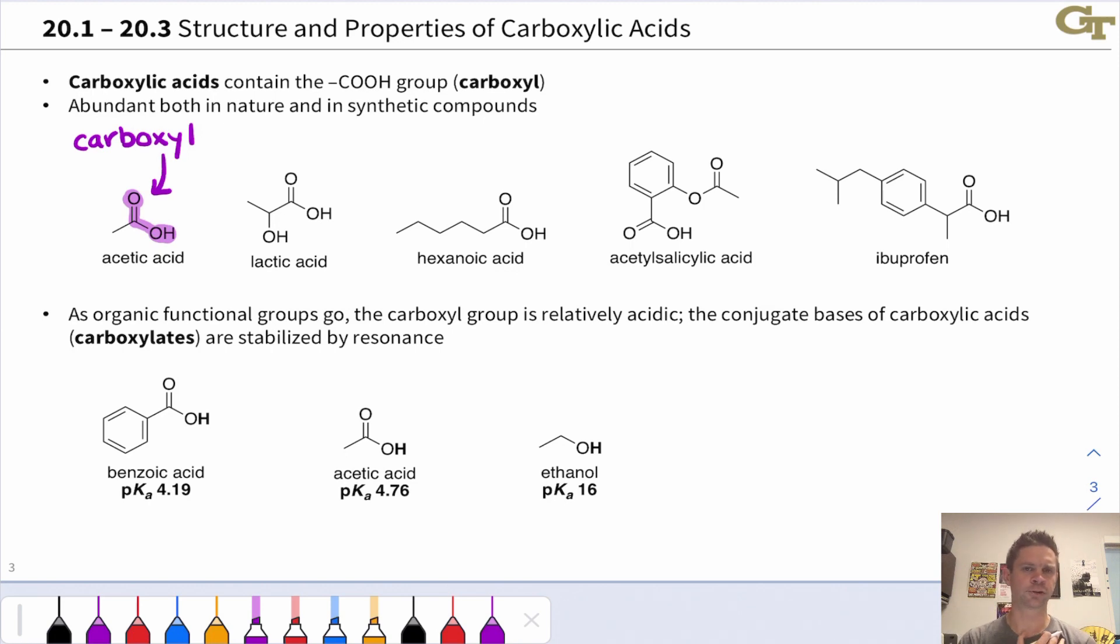Why is this? Let's think about the structures of the conjugate bases of each of these. We'll see that there's a structural factor in the carboxylate that stabilizes it relative to a simple alkoxide. Deprotonation of ethanol gives this alkoxide with O⁻ with negative charge pretty much localized to that oxygen.